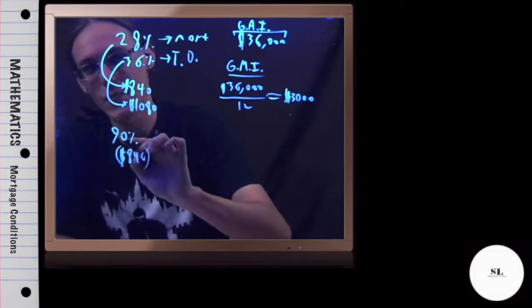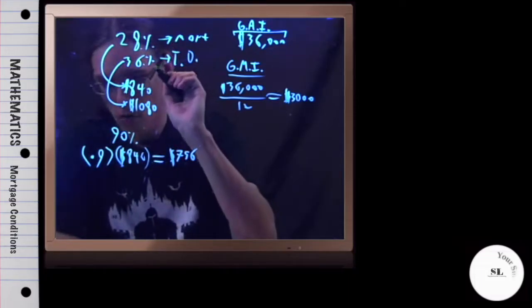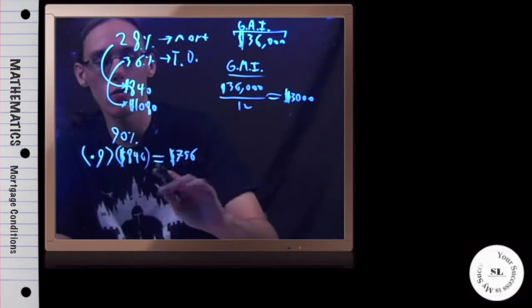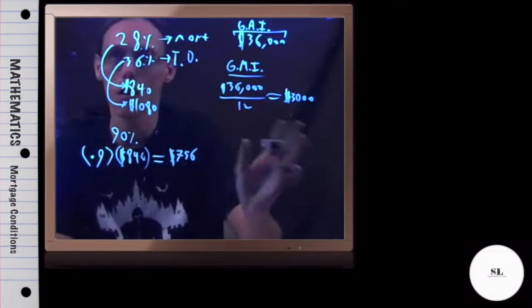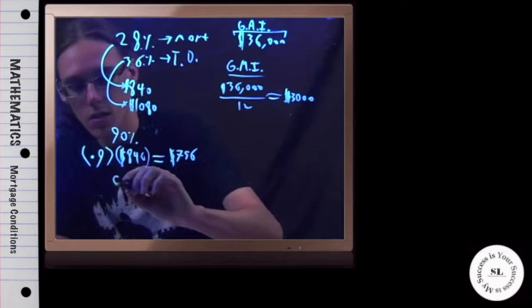Okay, so they're saying that the payment we actually make, this 28% was the maximum possible. Now they're saying, if the amount we actually pay is 90% of that maximum possible, how much is left over for all other debt?